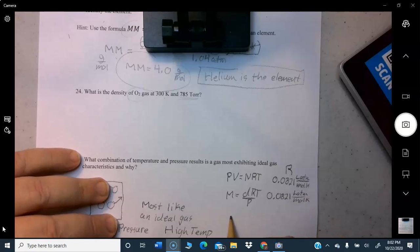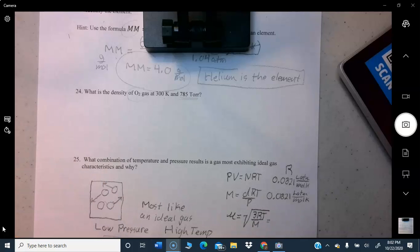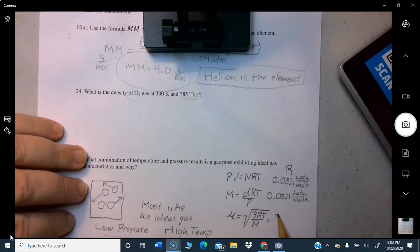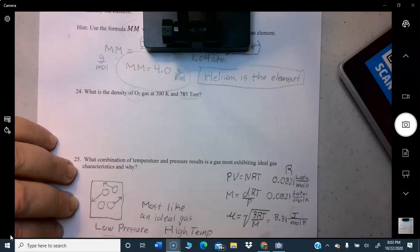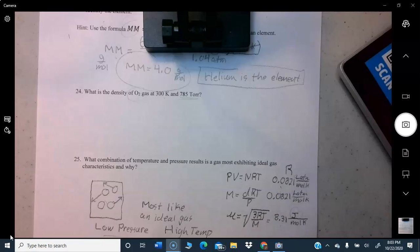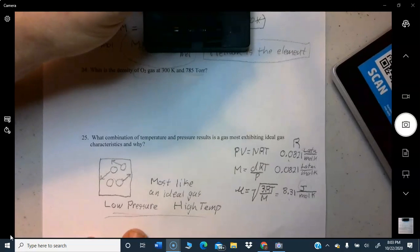For this one, the speed of particles, this is the root mean square speed, is three RT over molar mass. Which gas constant do you use for that one? For this one it's 8.31 joules, which is the standard unit of measure for energy throughout science, over moles Kelvin. Notice the bottom is the same in all three, the denominator. The difference is joules versus liter atmosphere. As I said earlier, there's a way to convert from liter atmosphere to joule and get from this number to this number, but it's not something we're going to talk about.